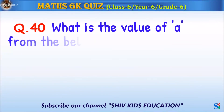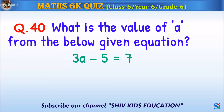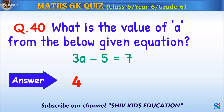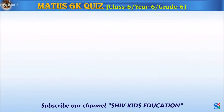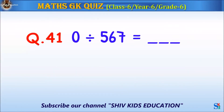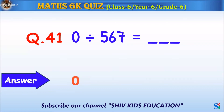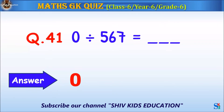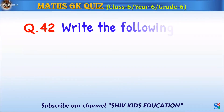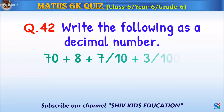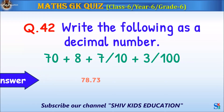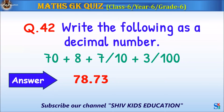Question 40: What is the value of A from the equation shown? The answer is 4. Question 41: 0 divided by 567 equals what? The answer is 0. Question 42: Write the following as a decimal number. The answer is 78.73.